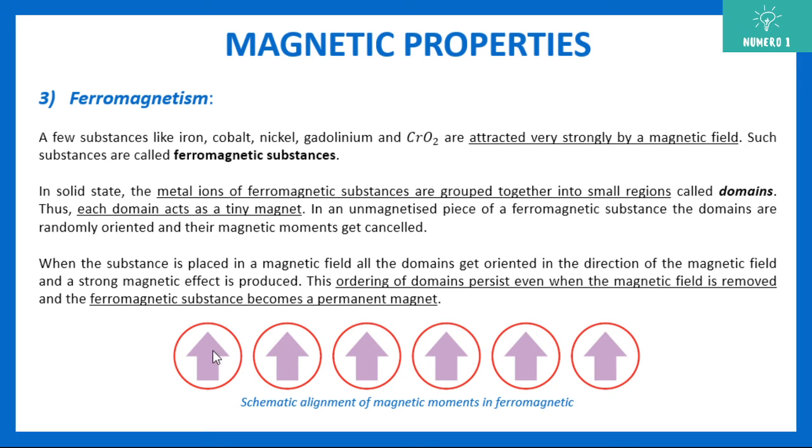So basically, this effect, even if you remove your magnetic field, what happens this effect stays. So these substances, ferromagnetic substances can be used to make permanent magnets. So these are your domains, even if you remove your magnetic field, it stays in the same way.